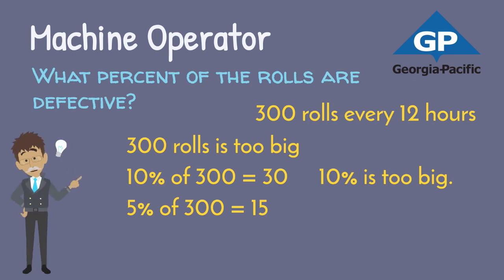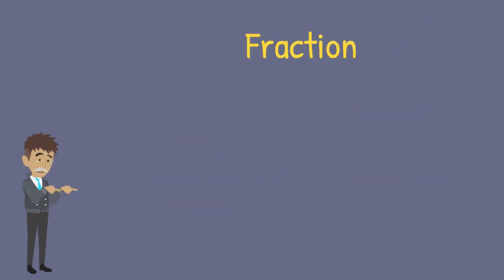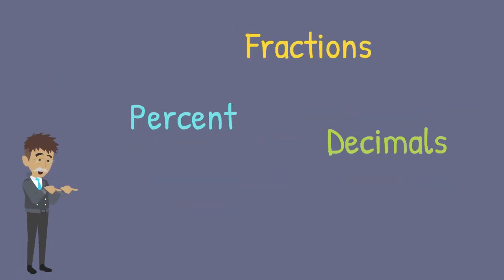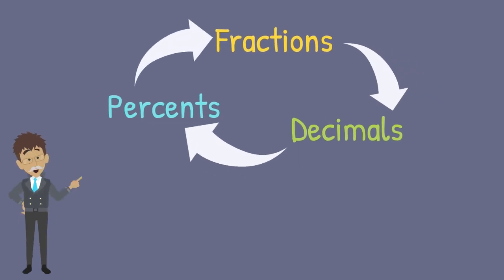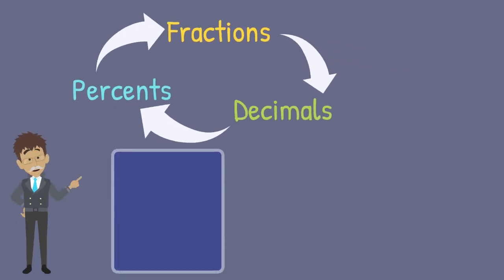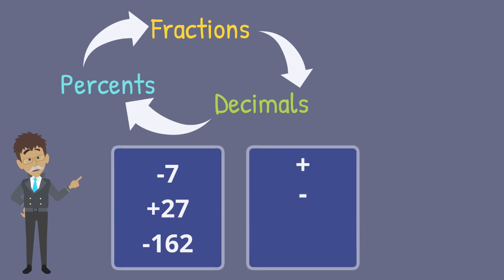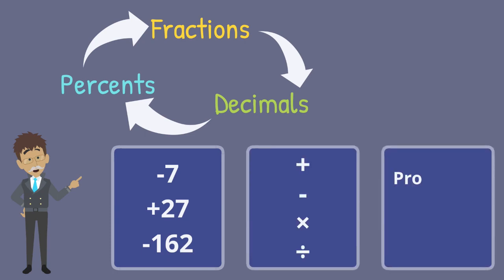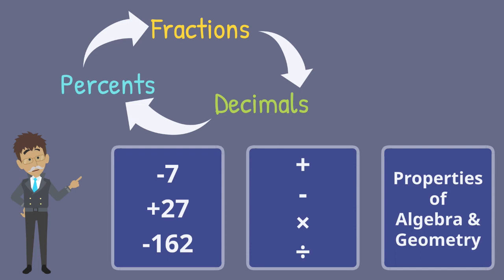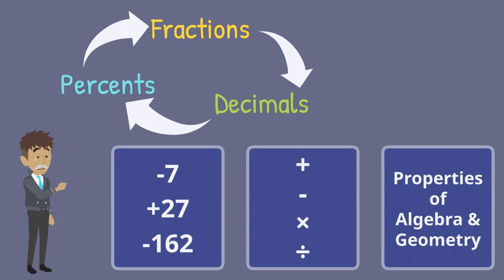Putting together the math we have already learned means we can solve many problems that appear in the world. Fractions, decimals, and percentages are just different forms of the same rational number. Working fluidly with positive and negative values, the four basic math operations, and some fundamental mathematical relationships means you can do just about anything you imagine.